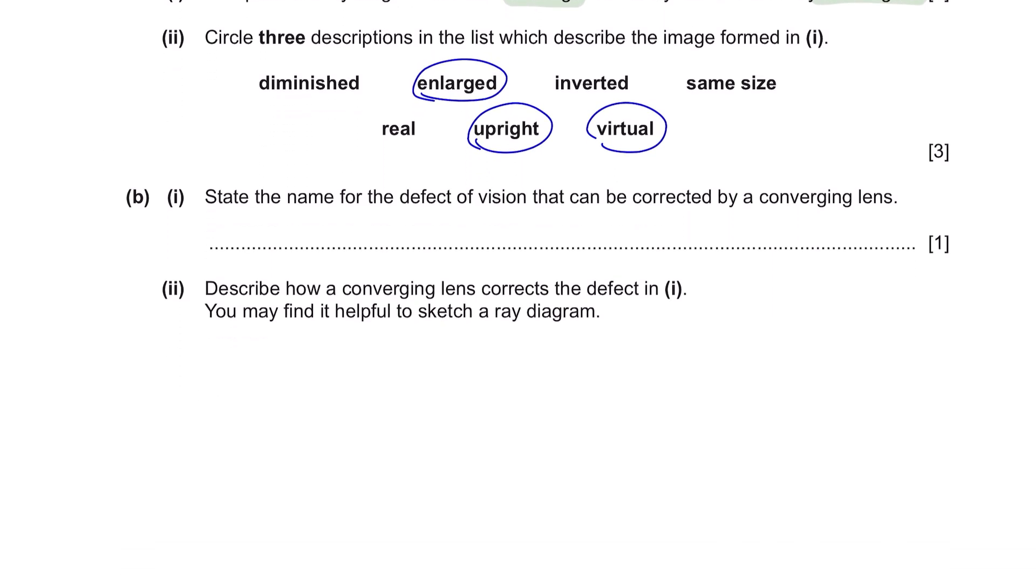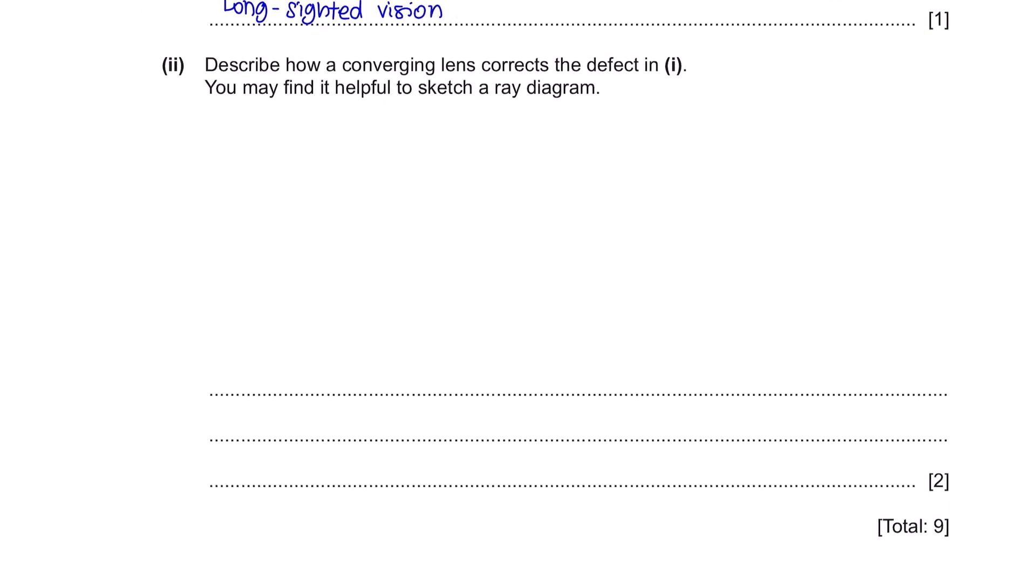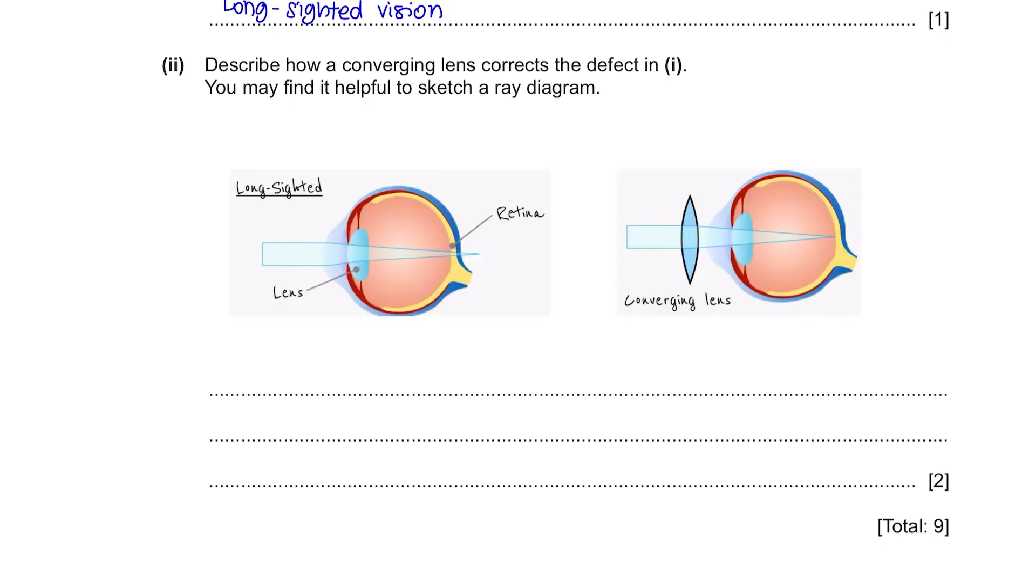Question B Part 1. State the name for the defect of vision that can be corrected by a converging lens. Converging lens can be used to correct long-sighted vision and diverging lenses can be used to correct short-sighted vision. Part 2. Describe how a converging lens corrects the defect in 1. You may find it helpful to sketch a ray diagram. People who are long-sighted have eyes that are too small. This is because the focus point is behind the retina at the back of the eye. This means that they cannot see far away objects clearly. But this can be corrected by using a convex or a converging lens.